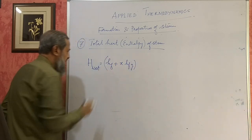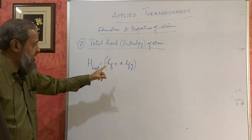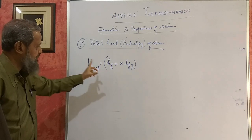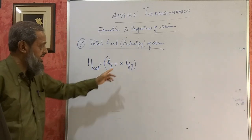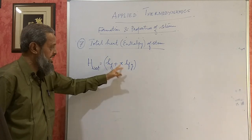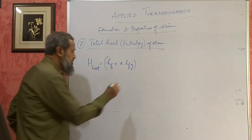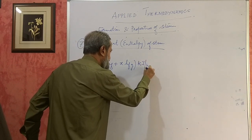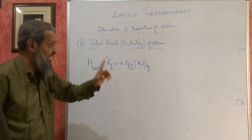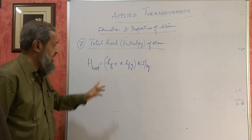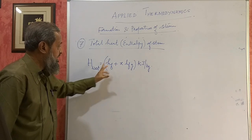HF is the sensible heat — the steam has taken all the sensible heat corresponding to its pressure, and we can get HF from the steam table if we know the pressure. Plus a part of latent heat: if it is 94% dry, it has taken 94% of latent heat; if it is 90% dry, it is 90% of latent heat. These formulae give values per kg, because from the steam table, the values of HF and HFG are for 1 kg only, starting from 0°C.